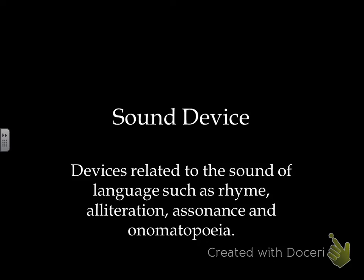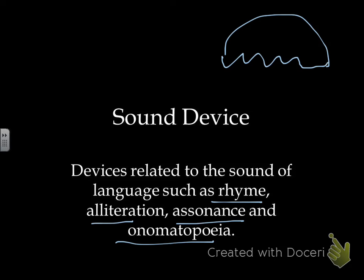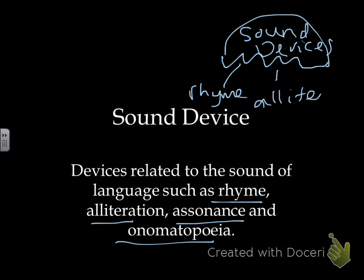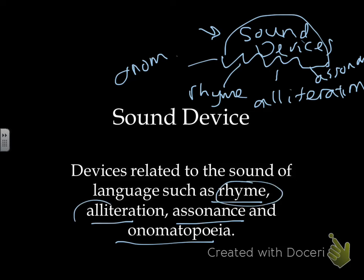A sound device is a device related to the sound of language. Under the sound devices umbrella in poetry, we have rhyme, alliteration, assonance, and onomatopoeia. Sound devices is the big category, and all of these things fall underneath it.